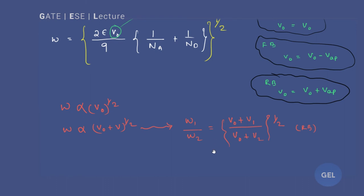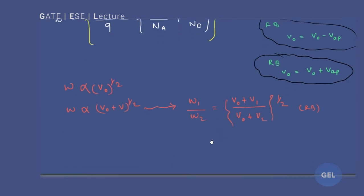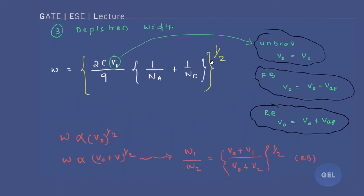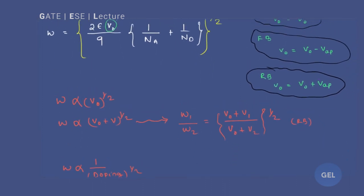You can also derive this relationship for forward bias. Most importantly: W is inversely proportional to doping. You can see this from the formula — if you increase the doping concentration, the depletion width will decrease. Please remember these three to four important relationships.